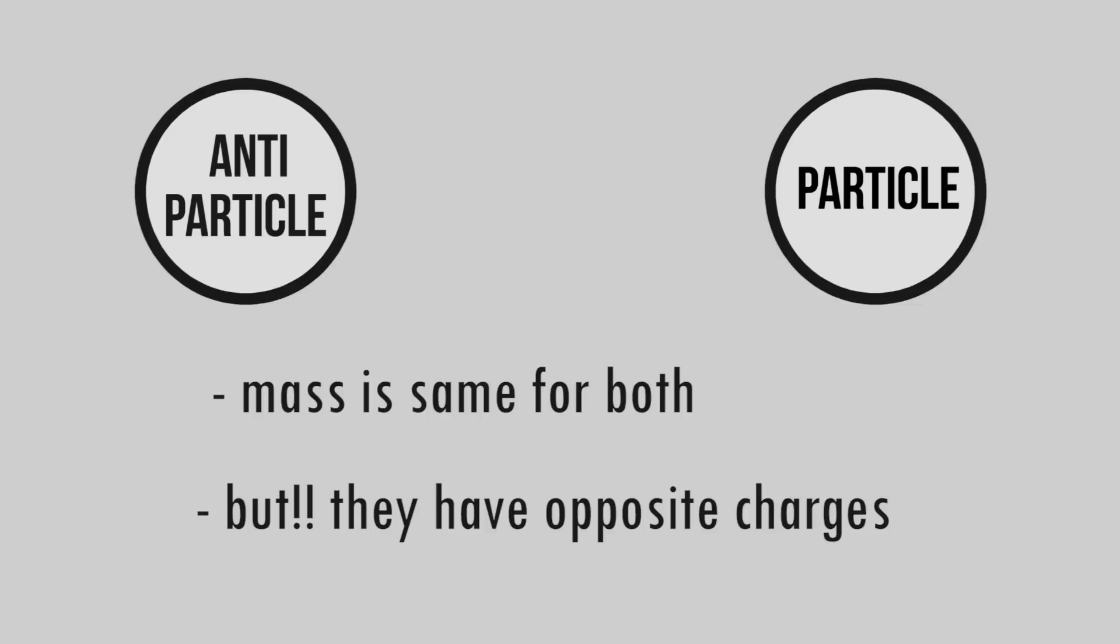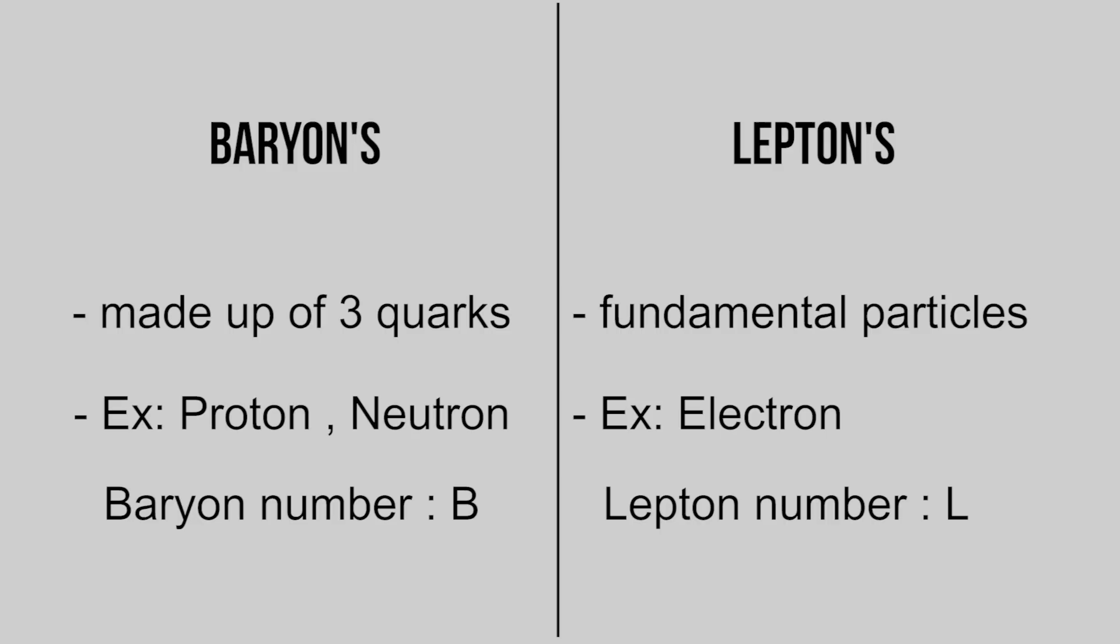The thing that separates them both is the charge that they carry and also a few properties such as baryon and lepton numbers. Baryons are the particles that are made up of three quarks like protons and neutrons. Electrons are fundamental particles.